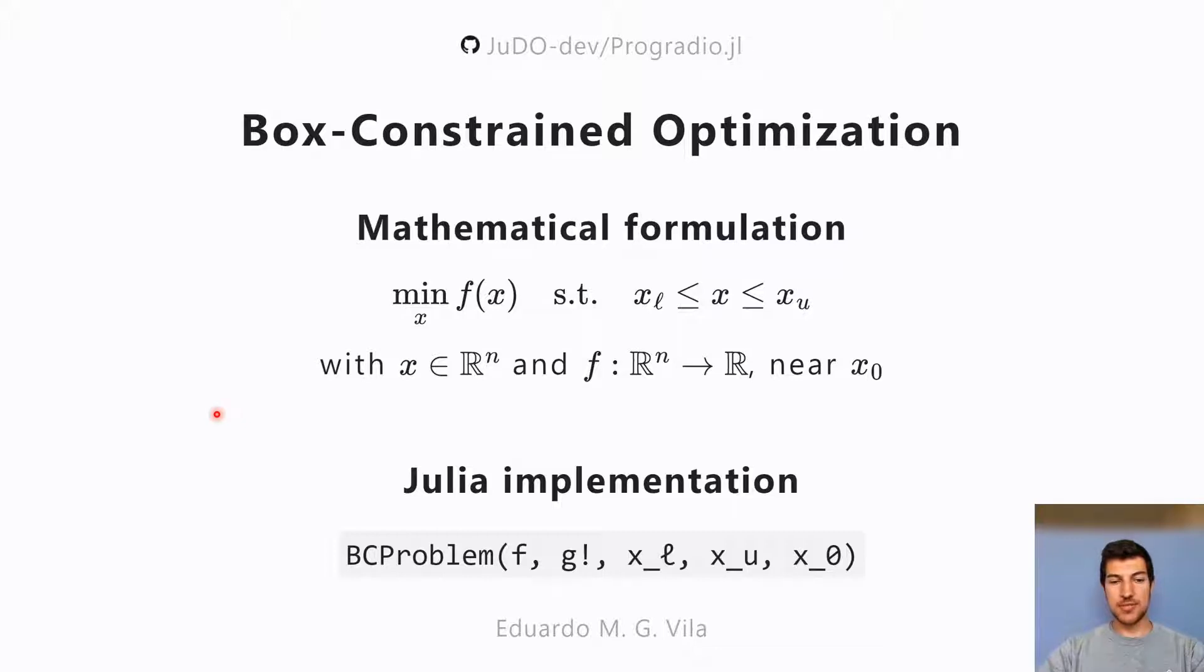It naturally follows that the Julia implementation would be to create a composite type including the objective function, the gradient, as well as the lower and upper bounds and the initial guess.